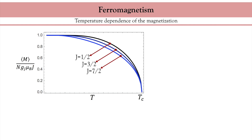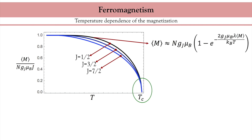In this graph I depict the magnetization as a function of temperature for four different total angular momenta J. The magnetization decreases progressively upon increasing temperature and vanishes at the Curie temperature T_C. At low temperature, the expansion of the Brillouin function gives an exponential decay, which is not very realistic because we neglected the contribution of spin waves. Close to the Curie temperature, we obtain an interesting scaling that is independent of the parameters of the system, such as the exchange or the total angular momentum. This universal scaling is very important and we will return to it in the next lecture.